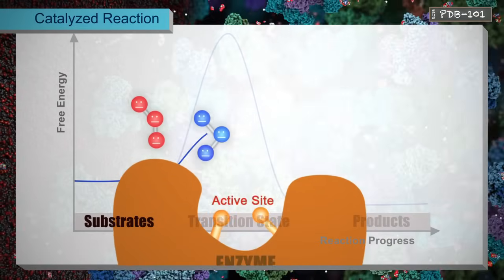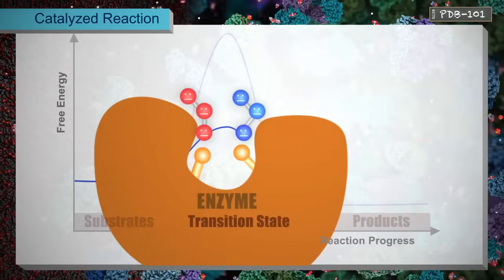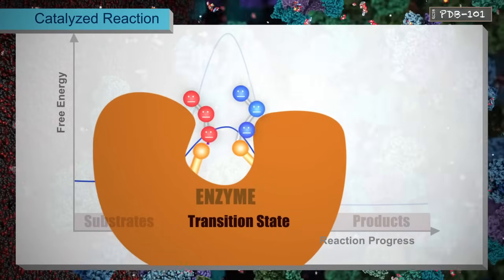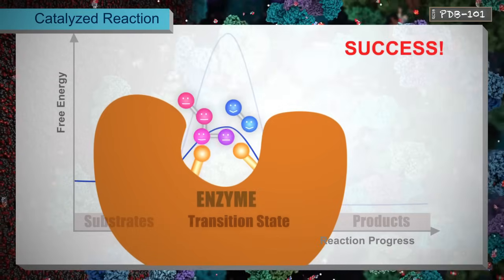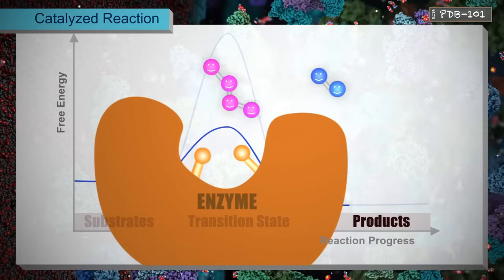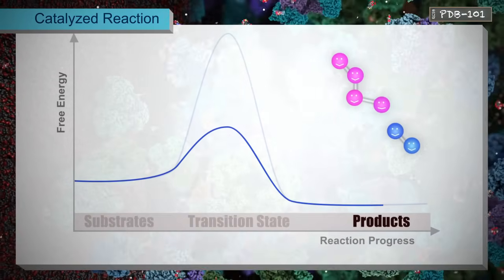An enzyme acts as a template for the reaction, binding to its substrate and holding it in the proper position to form the product. An enzyme also surrounds its substrate with reactive groups that stabilize a transition state, making it easier for the reaction to occur.